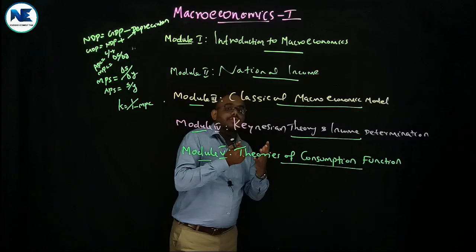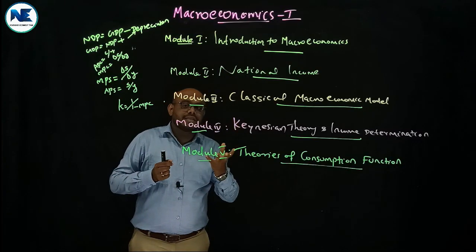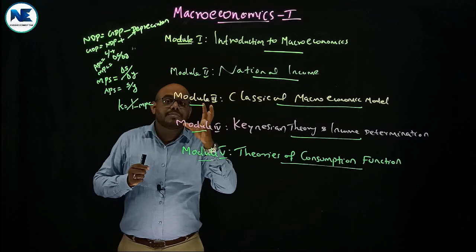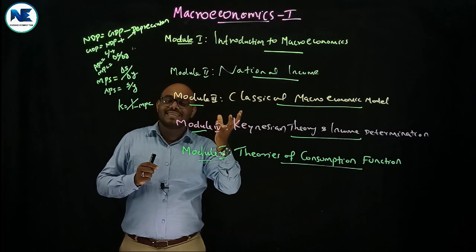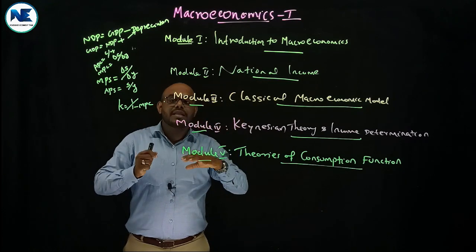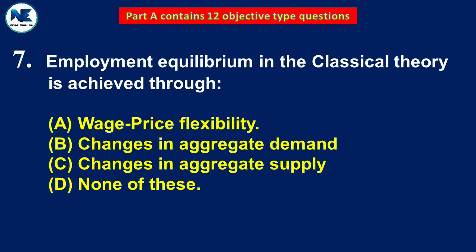Fifth question: Say's Law of markets — supply creates its own demand. Related to module 3, classical macroeconomic model. Sixth question: wages and prices do not adjust quickly to restore general equilibrium — this is a property of Keynesian economics. Wage-price flexibility is associated with classical economics, but Keynes firmly believed in wage-price rigidity.